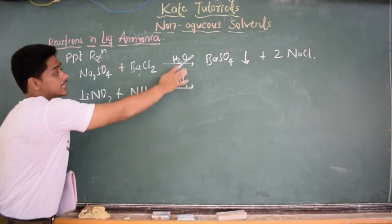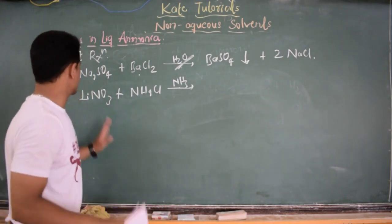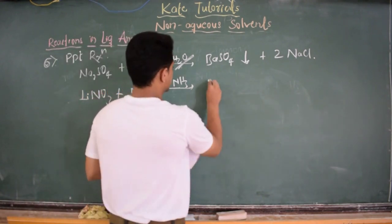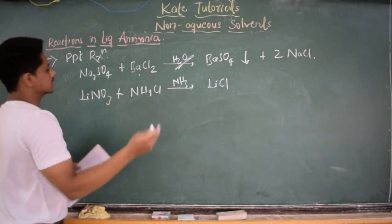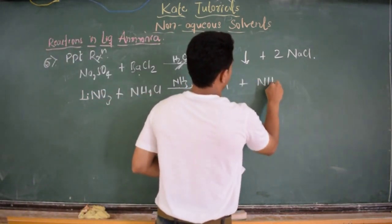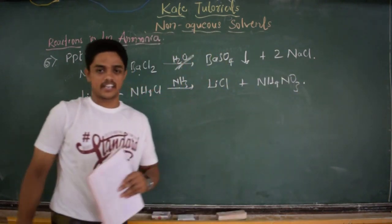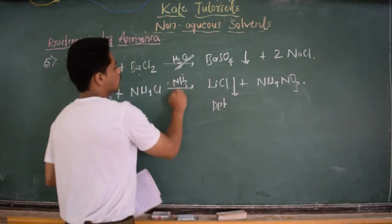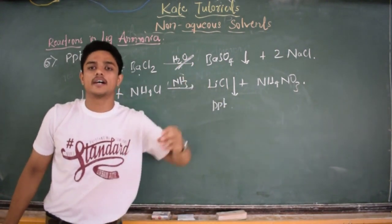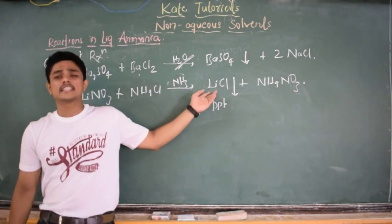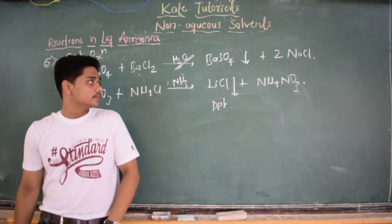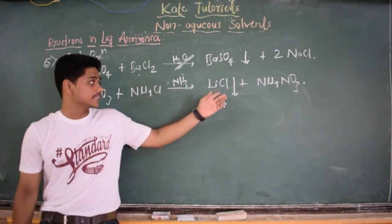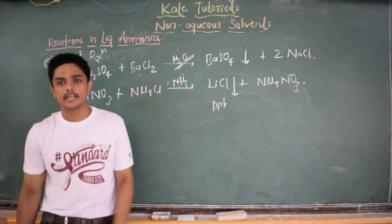Ammonium chloride is acid in liquid ammonia, whereas it was salt in H2O medium. When LiNO3 reacts with NH4Cl in liquid ammonia, we get lithium chloride plus NH4NO3 — ammonium nitrate. This lithium chloride is precipitated in liquid ammonia, whereas the same lithium chloride when dissolved in water is not a precipitate — it just acts as a salt and dissolves. But in liquid ammonia, it is precipitated.